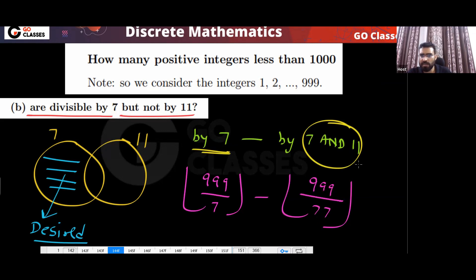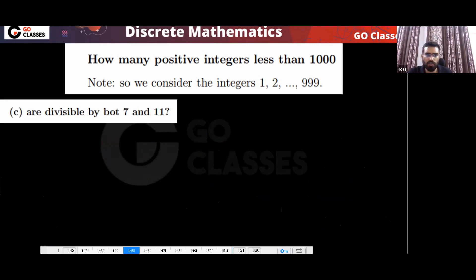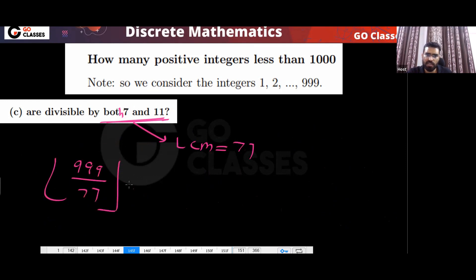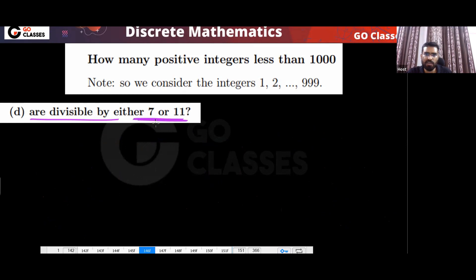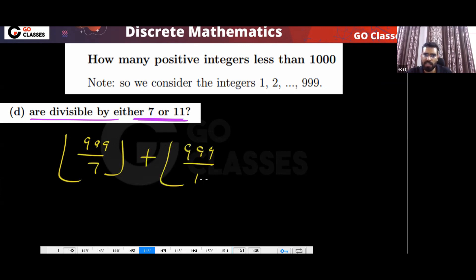The LCM of 7 and 11 is 77. So the answer for 'divisible by 7 but not 11' is floor(999/7) minus floor(999/77). Next, 'divisible by either 7 or 11' equals floor(999/7) plus floor(999/11) minus floor(999/77).